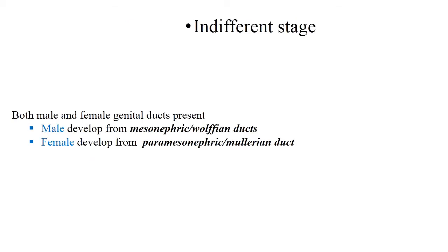In the differentiated stage, in males development proceeds from the mesonephric (Wolffian) ducts, and in females from the paramesonephric (Müllerian) ducts.